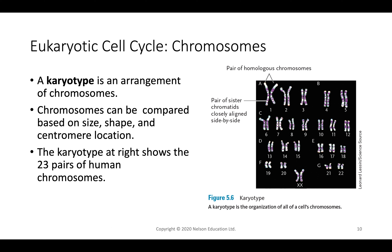If we align human chromosomes by size, we can make a karyotype — an organized arrangement of chromosomes compared by size, shape, and centromere location. The karyotype shows 23 different pairs: the largest is chromosome 1, the smallest autosome is 22, and the sex chromosomes X and Y also pair. Chromosomal pairs 1 through 22 are autosomal pairs; the sex chromosomes are the 23rd pair.